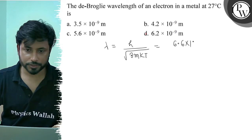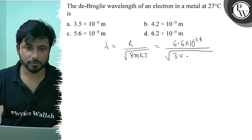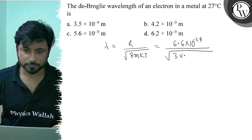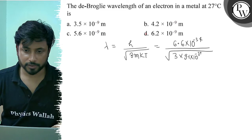6.6 x 10^-34 upon root under 3 into mass of electron. Mass of electron becomes 9.1 into 10^-31 kg into